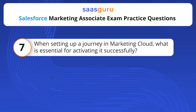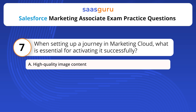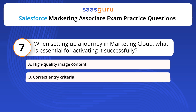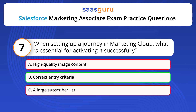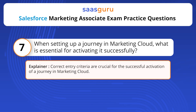When setting up a journey in Marketing Cloud, what is essential for activating it successfully? Options: High Quality Image Content, Correct Entry Criteria, A Large Subscriber List. The answer is option B — Correct Entry Criteria. Correct Entry Criteria are crucial for the successful activation of a journey in Marketing Cloud.